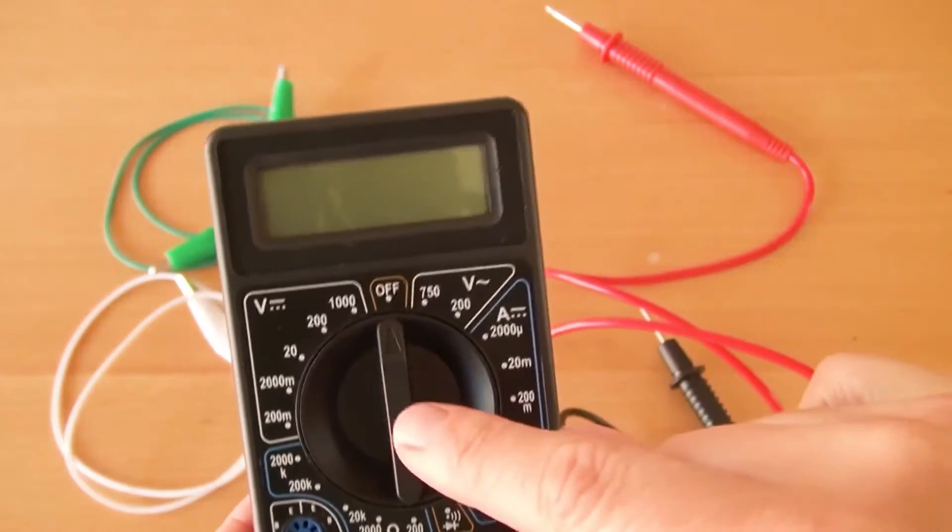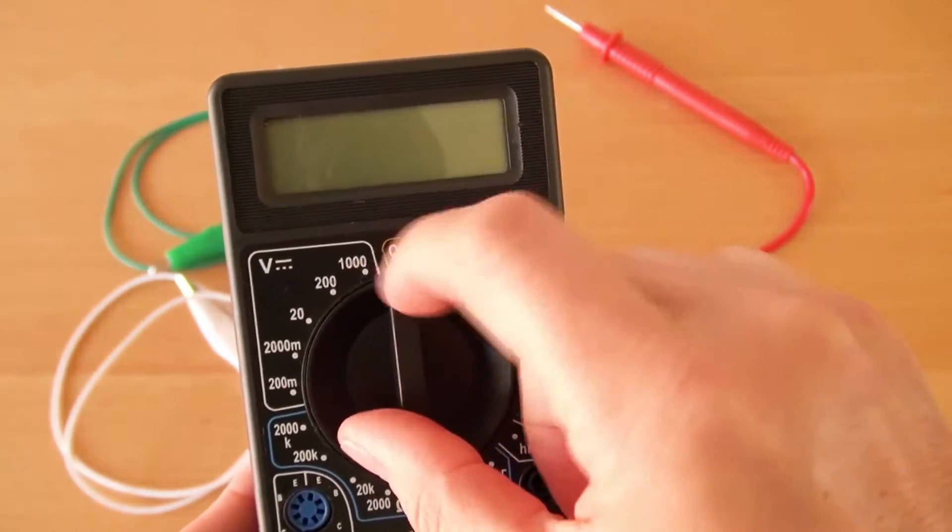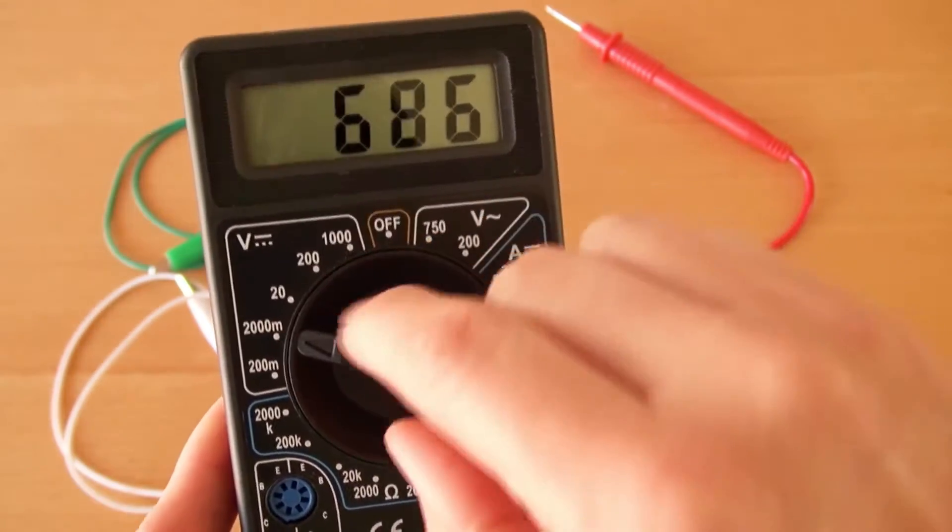Then, set the dial of the multimeter to measure voltage at a setting of 2000m for millivolts.